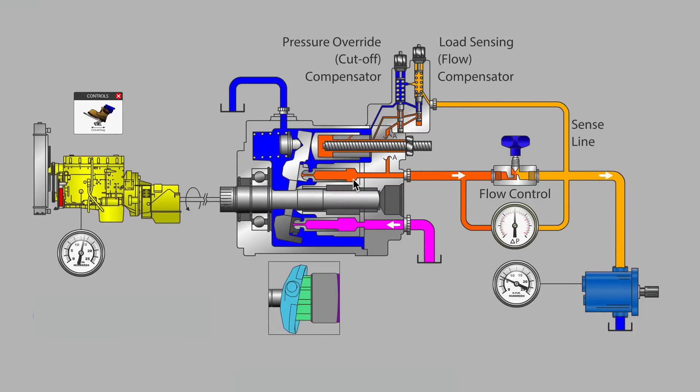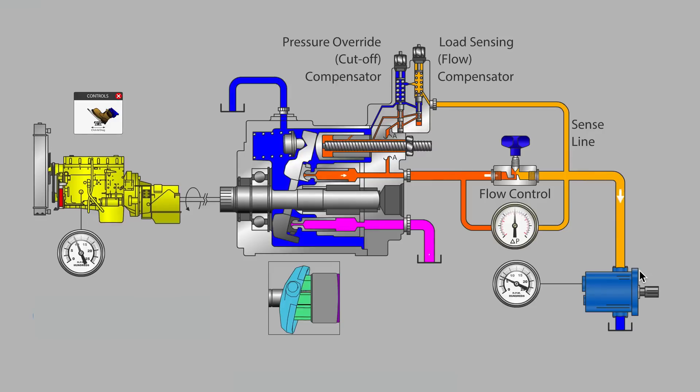We're using a load sensing compensated piston pump, sometimes called a flow compensated piston pump. And we want our hydraulic motor to maintain steady speed even if the prime mover, the diesel engine, has some speed variance. Perhaps our hydraulic motor is turning an electric generator—that's an application where you want very steady RPMs of the hydraulic motor.